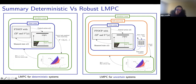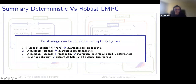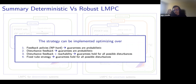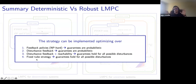Depending on the type of policies you optimize over, you get probabilistic safety guarantees, and these depend on the number of rollouts — you get a probability of being safe rather than deterministic safety. Interestingly, the simplest fixed-tube approach, which decouples MPC and tracking, can provide deterministic safety guarantees, though at the cost of performance.